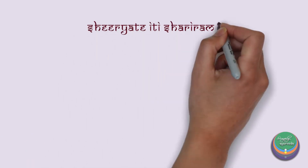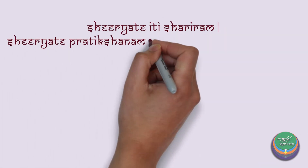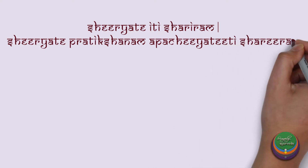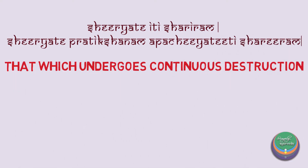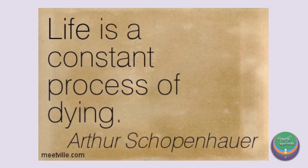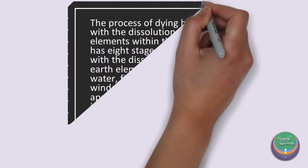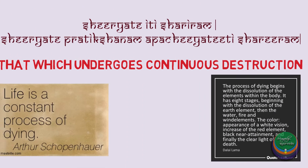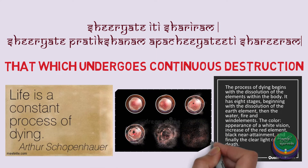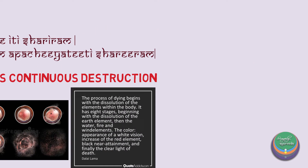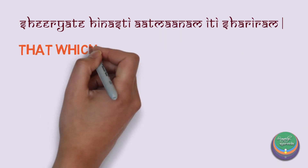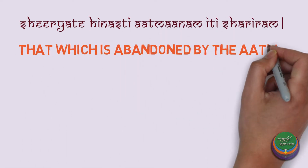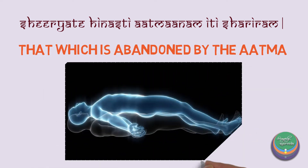Coming to its definitions: Shiryate iti Shariram — Shiryate pratikshanam apachiyati iti Shariram. Sharira is that which undergoes destruction continuously, that is, that which is getting destroyed every moment.